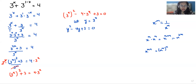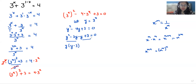This looks like a quadratic equation, so we can use the middle term split method. We write minus 4y as minus 3y minus y, giving y^2 minus 3y minus y plus 3 equals 0. From the first two terms we take y as common, and from the next two terms we take minus 1 as common, giving (y minus 3)(y minus 1) equals 0.